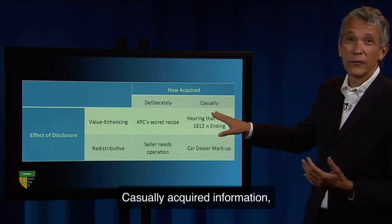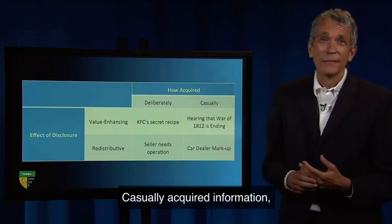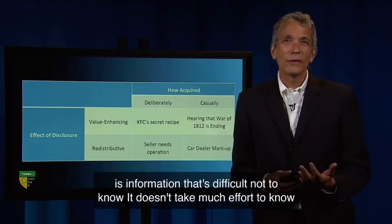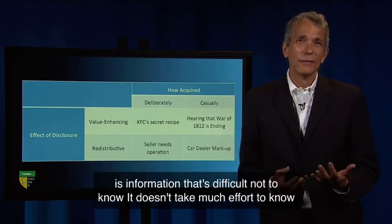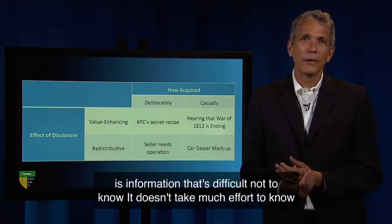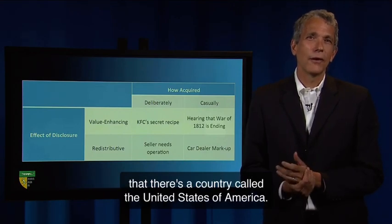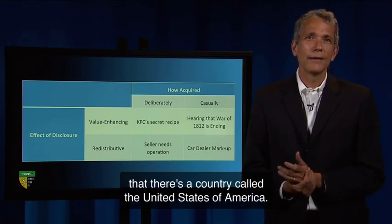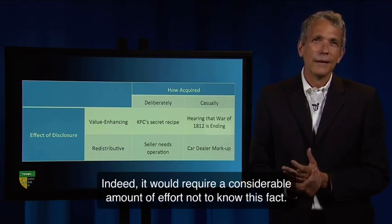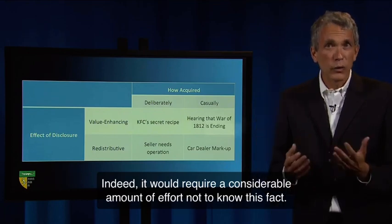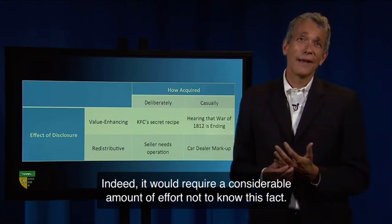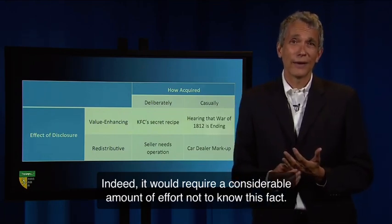Casually acquired information is information that's difficult not to know. It doesn't take much effort to know that there's a country called the United States of America. Indeed, it would require a considerable amount of effort not to know this fact.